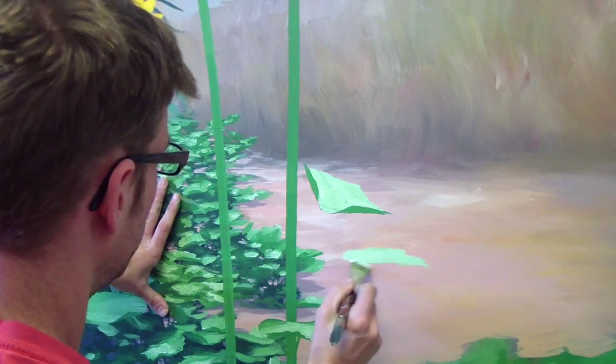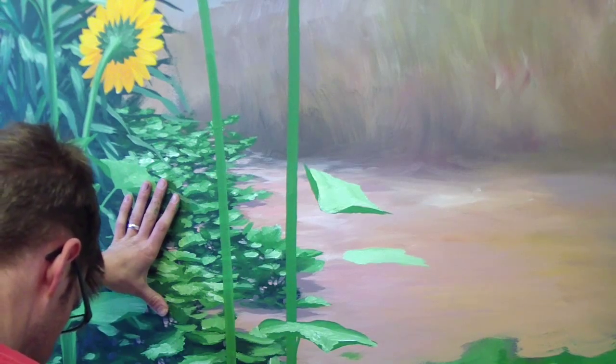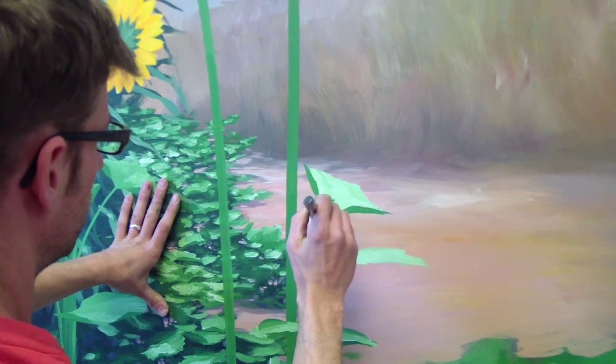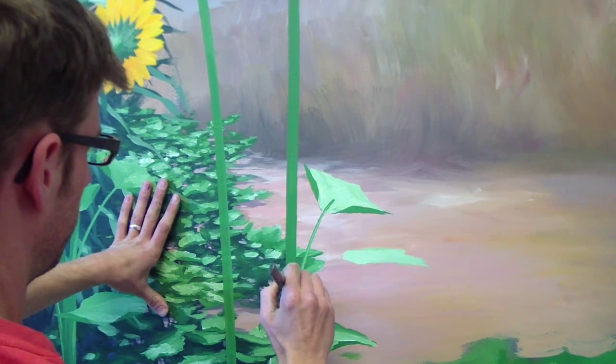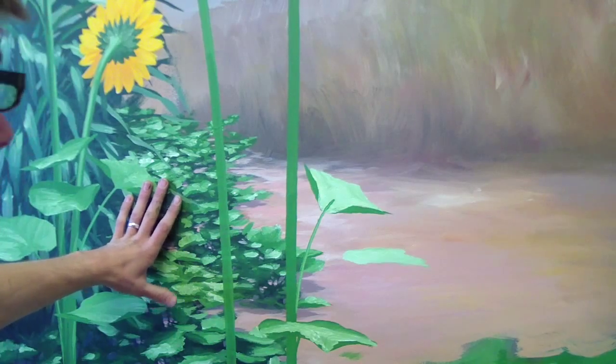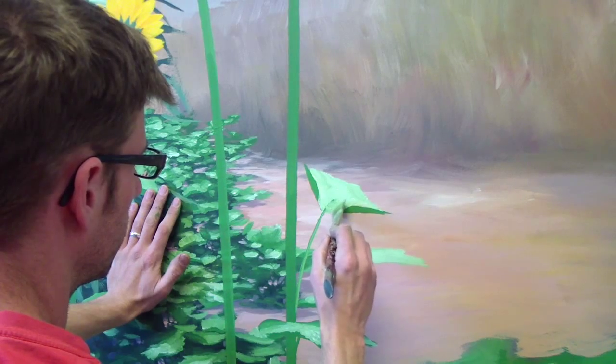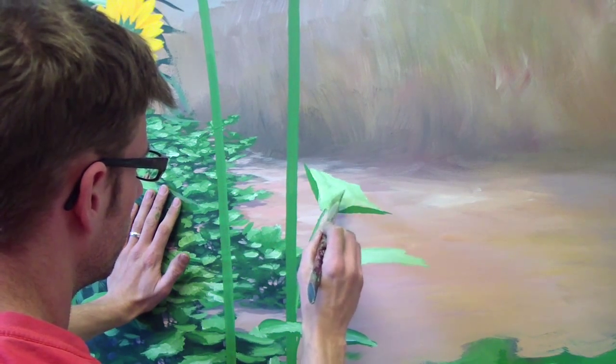I'll mess with that in a minute. Then I'll make my stem come down. There. I'll blend this out. This side's not as close, not as directly facing the light so we'll do more green on this one.